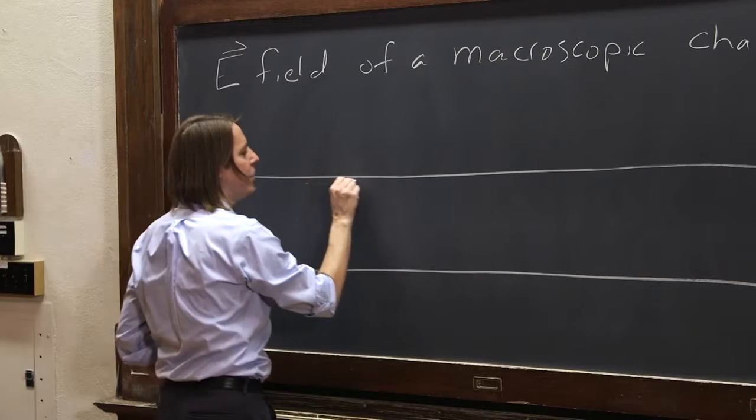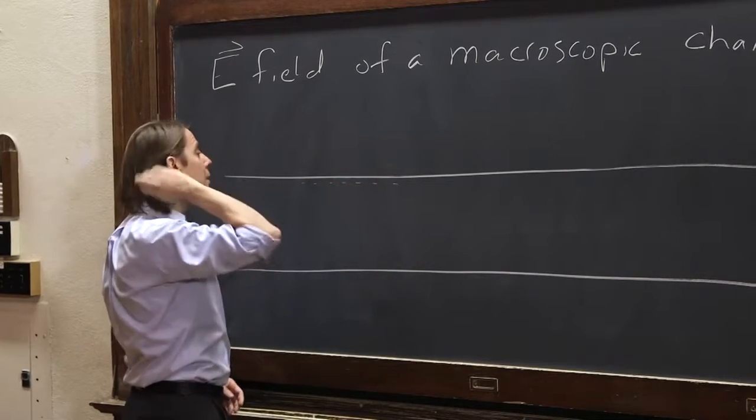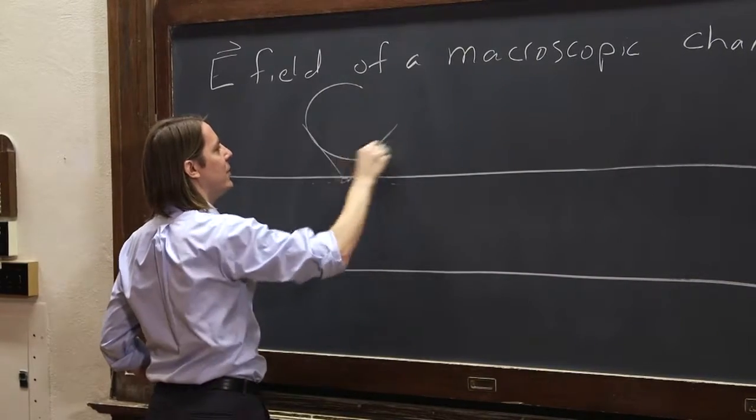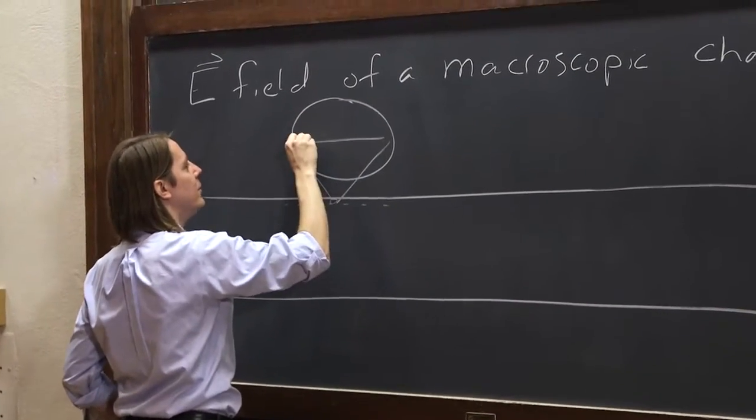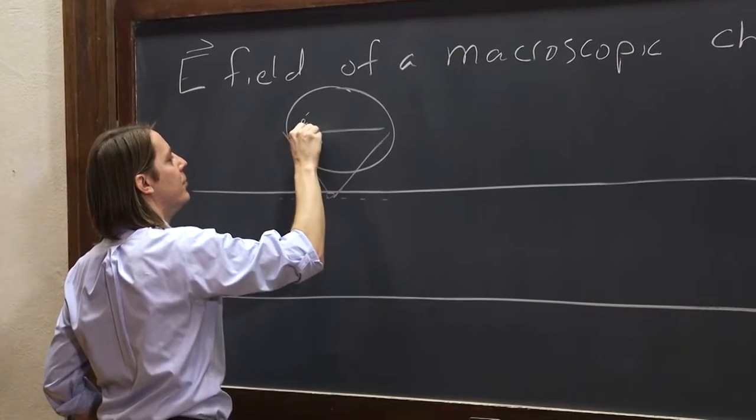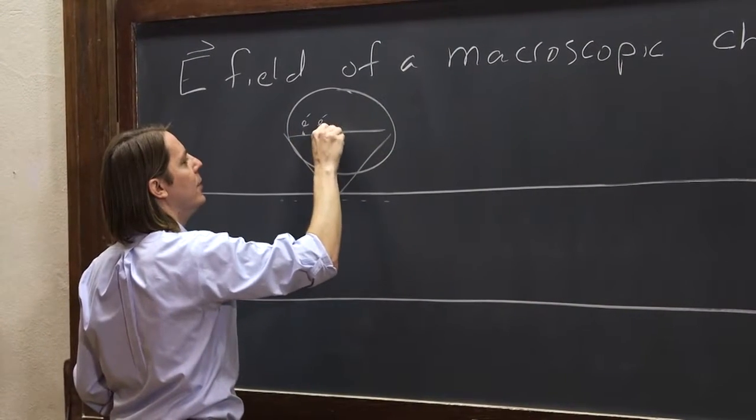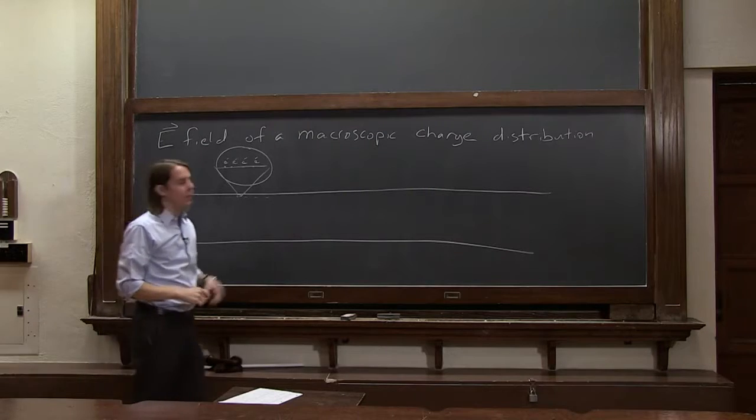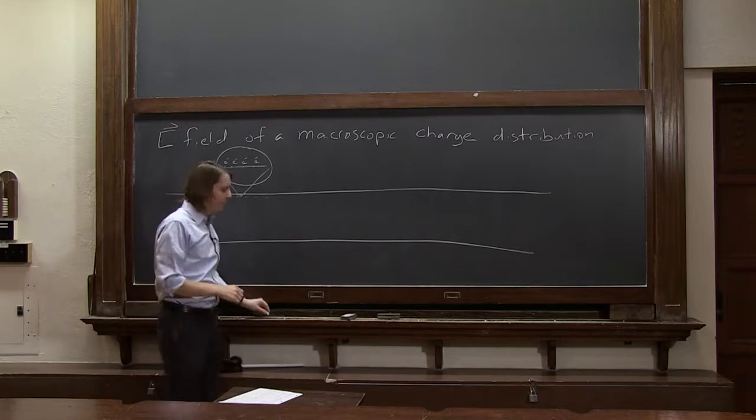So what that really means at the microscopic scale is that the negative charge on the surface, if we draw it like that, is really, if we were to zoom in to the microscopic scale, really just little electrons on the surface sitting there at some density, those that have been put on by the rubbing.